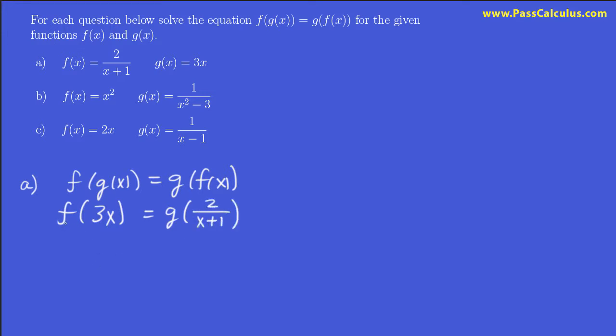Now what does f do to something? It does 2 over that thing plus 1, so f of 3x would be 2 over 3x plus 1. And what does g do to something? Just multiplies it by 3. So we have that.